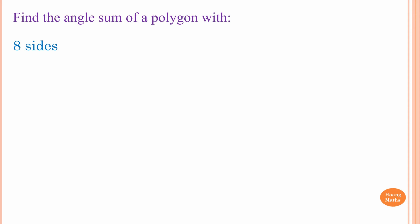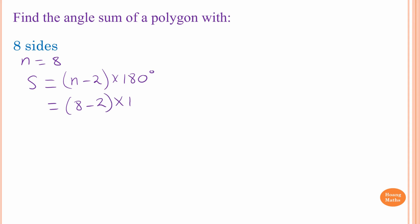Let's do some examples. Find the angle sum of a polygon with 8 sides. We know n = 8. The sum of interior angles S = (n − 2) × 180 degrees. So that's 8 − 2 = 6, times 180 degrees. The angle sum equals 1080 degrees.